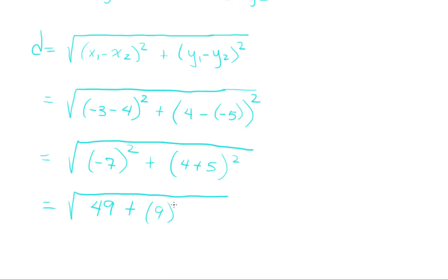Now, 49 plus 81. Well, what is that equal to? 9 plus 1 is 10, 8 plus 4 is 12, plus 1 is 13, so 130.